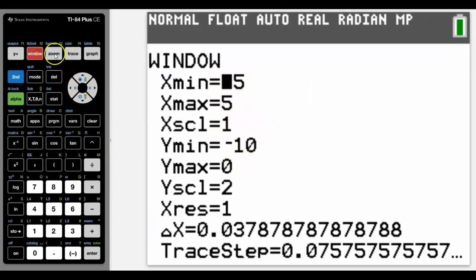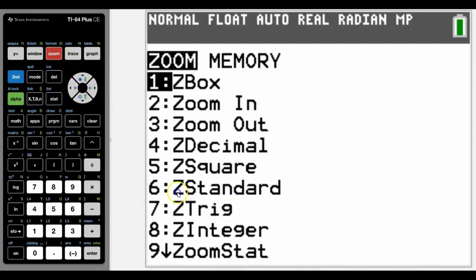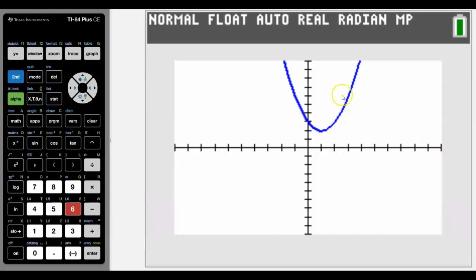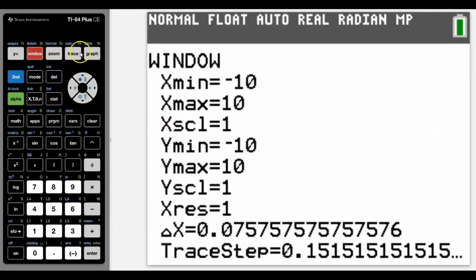So the regular window that we'd have set is Zoom Standard, which is number six, and that will give us a negative 10 to 10 in both directions window. And we can see now it's going to give us this graph.